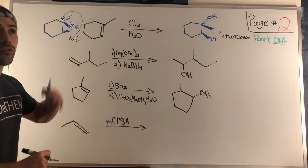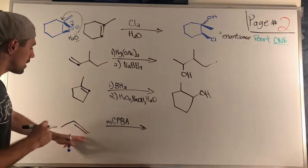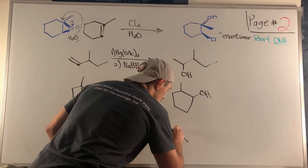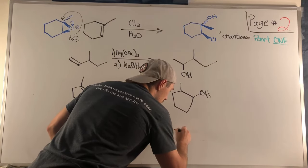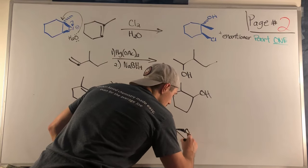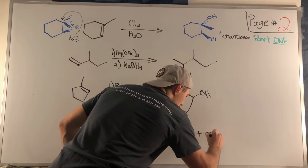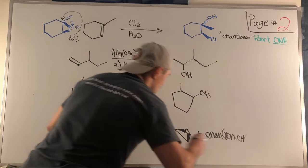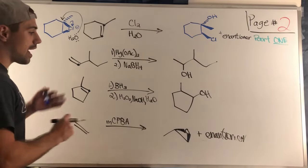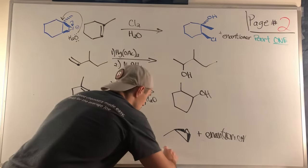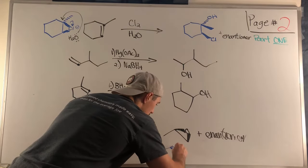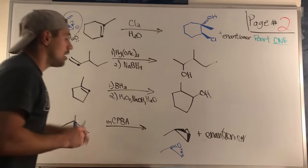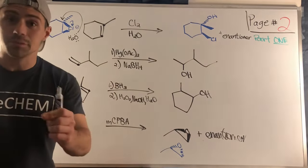The last problem on the first part of page two is creating an epoxide. There are no real tricks here. You can draw the epoxide and then add plus enantiomer, because there's no reason why the epoxide couldn't form on either face of the double bond. That does it for the first part of page two.